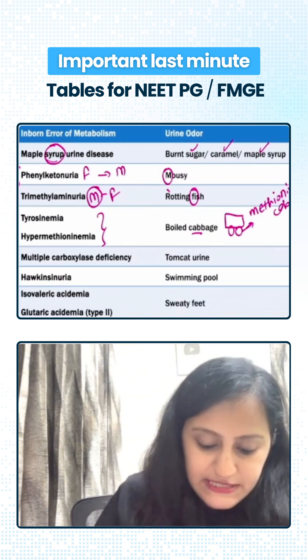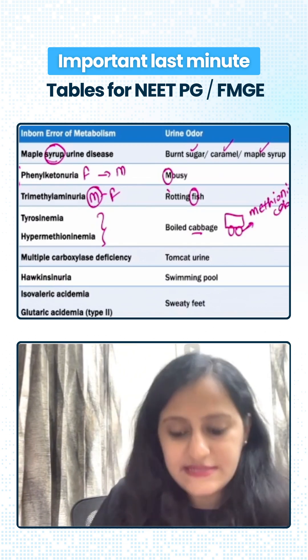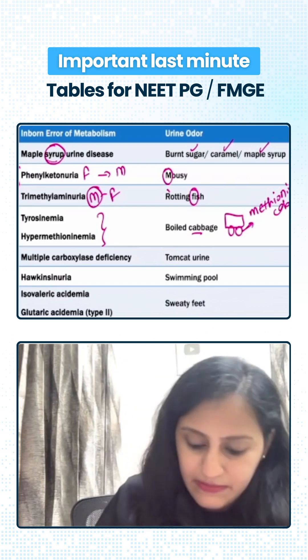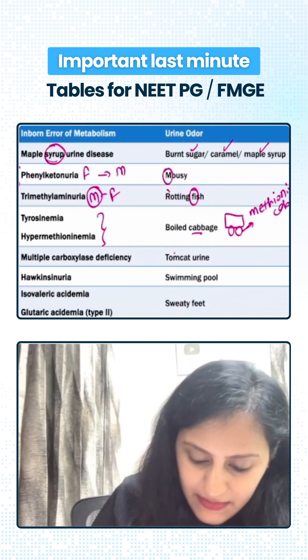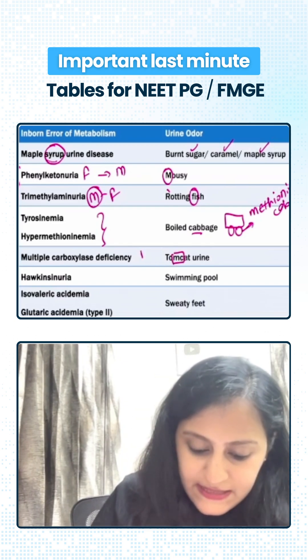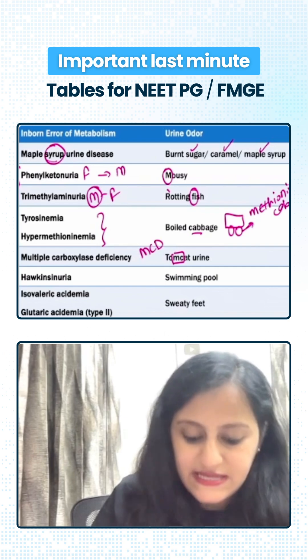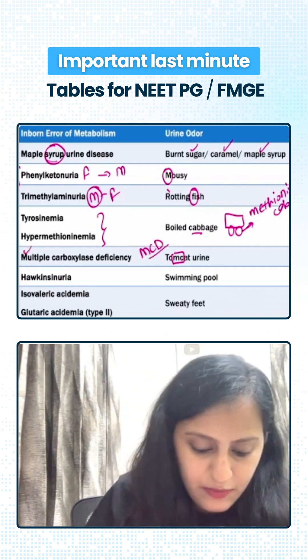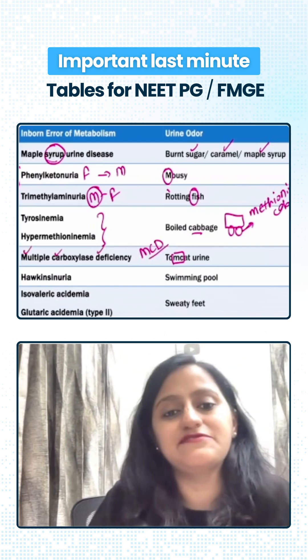Then you have multiple carboxylase deficiency, which has tomcat urine odor. Remember it has M and C — tomcat is for MCD, that is multiple carboxylase deficiency.